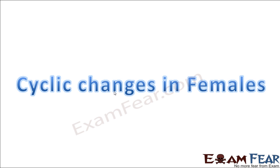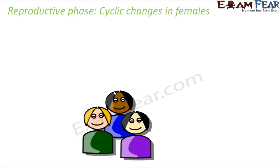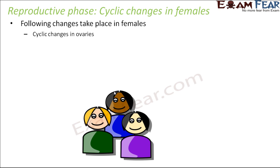What do we mean by cyclic changes? That means changes which occur periodically. Some periodical changes keep on taking place in a female once she has entered into her reproductive phase. Following changes are quite evident in females: one is cyclic changes in ovaries — the ovaries undergo a periodic change. And the second is hormones, because hormones play the most important role in females, and the level of hormones also decides a lot of changes which take place in the ovaries.